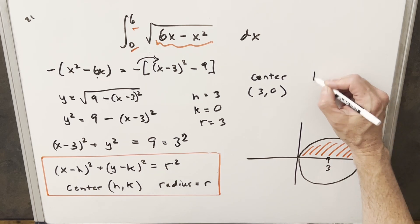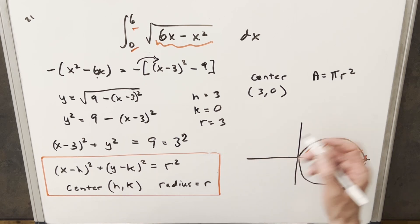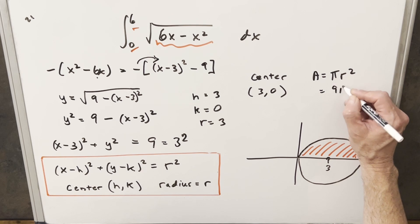This is going to be really easy, because we know the area of a circle, the equation for that is going to be pi r squared. We know our r value. So the area of the whole circle is going to be r squared, or 9 times pi.